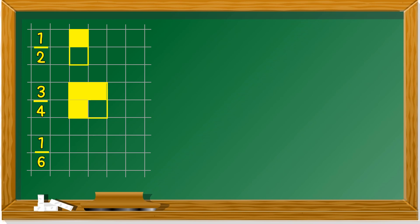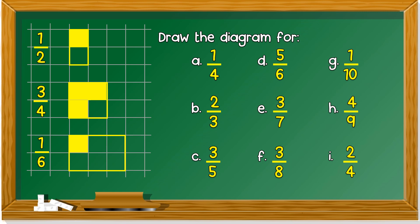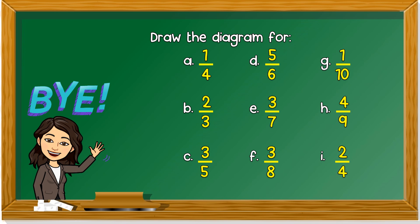One last example. 1 over 6. The denominator is 6. Draw equal part of 6. And you only color 1. In your exercise book, your exercise book has these squares as well, right? Dalam buku latihan masing-masing, in your exercise book, draw the diagram for the following. You can pause the video and copy all these questions first. Then, you draw. Remember, this is your homework for today. Draw the diagram for the following.